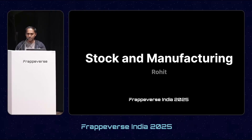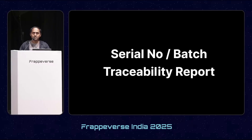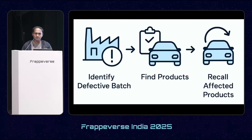I'm presenting the v16 features related to stock and manufacturing. The first is the serial number batch traceability report. In the automobile industry, when a company receives multiple complaints about their product, they have to first identify a defective batch, then find which products used the same batch so they can recall all the affected products and fix them.